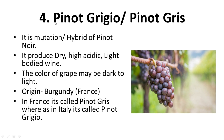Next is Pinot Grigio or Pinot Gris. In Italy it is called Pinot Grigio and in France it is called Pinot Gris, but both are the same variety. It is a mutation or hybrid of Pinot Noir, which is a black grape variety with a thin, delicate skin. It produces dry, high-acidity, light-bodied wine. The color of the grape may vary from dark to light, and the origin is Burgundy, France.